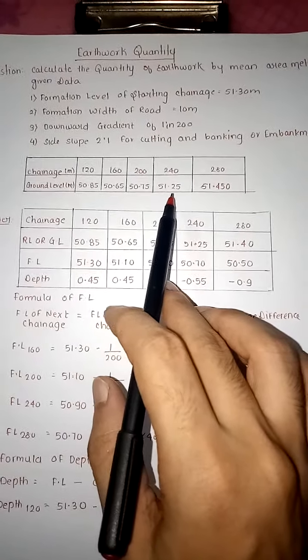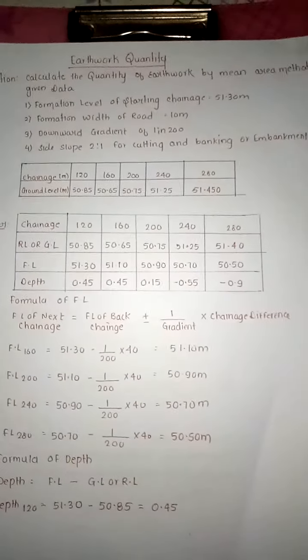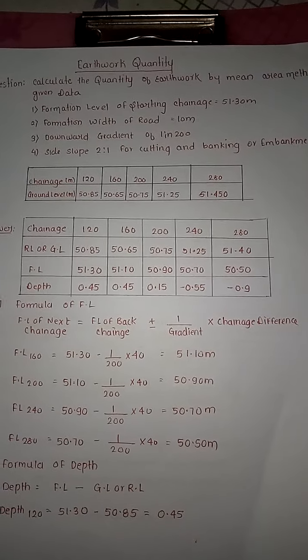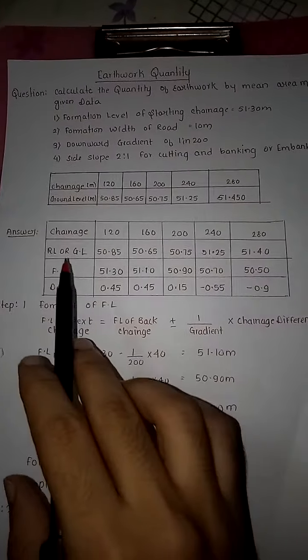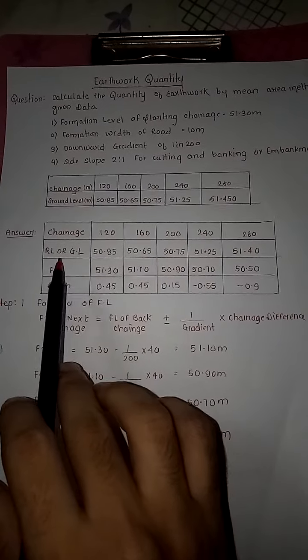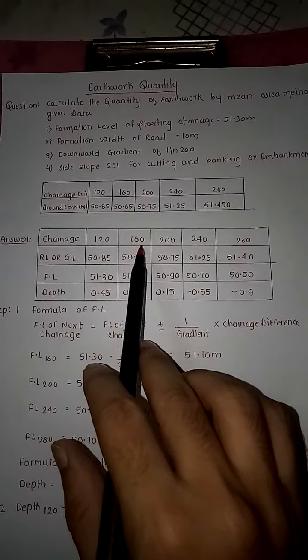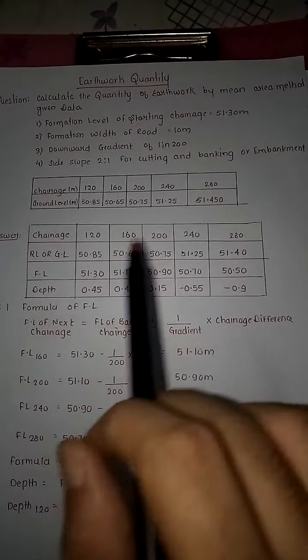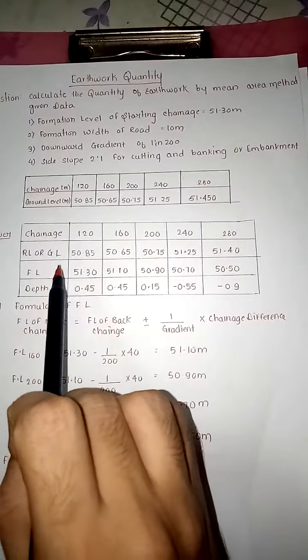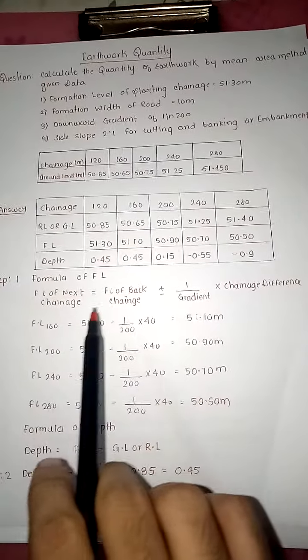Chainage given: 120, 160, 200, 240, 280. Ground levels: 50.85 for 120, 50.85 for 160, 50.65 for 200, 50.75 for 240, 50.25 for 280, and 51.45. Now answer: first we will make a table. In this table, chainage, GL, FL.